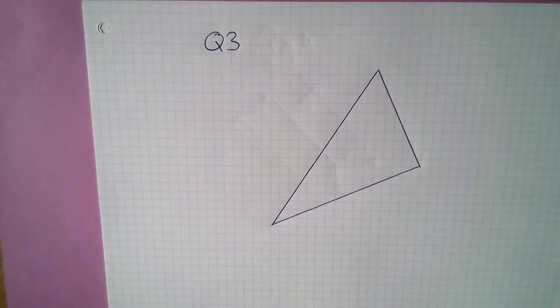Question 3 requires you to do a couple of constructions once you've drawn a large triangle. Here's my large triangle. You need to do a perpendicular bisector on each of the sides. I'm going to do it on one and then show you the picture of what it should look like.